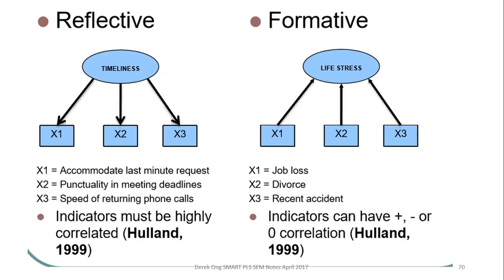Just to give you an example of the difference between reflective and formative: if you have a latent variable called timeliness, then the reflective measures would be things like accommodating last-minute requests, punctuality in meeting deadlines, and speed of returning phone calls. These are all reflective. It doesn't matter even if one indicator is taken out — timeliness still stays. And importantly, the indicators must be highly correlated to ensure that they reflect the latent variable timeliness.